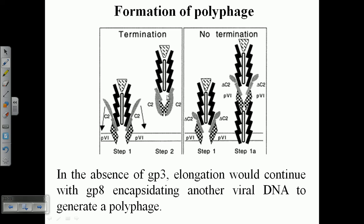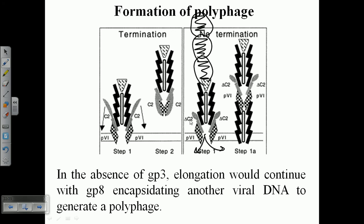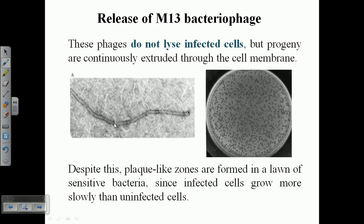In the absence of gp3, elongation would continue with gp8 encapsulating another viral DNA to generate a polyphage. Polyphage means many phage particles are joined together — one after another, each being complete phage particles, but not yet releasing outside. This configuration of fully assembled phage particles attached to each other prior to release is called polyphage formation.